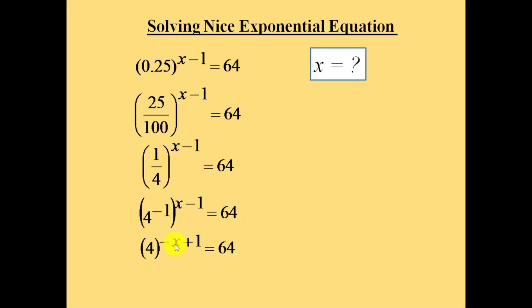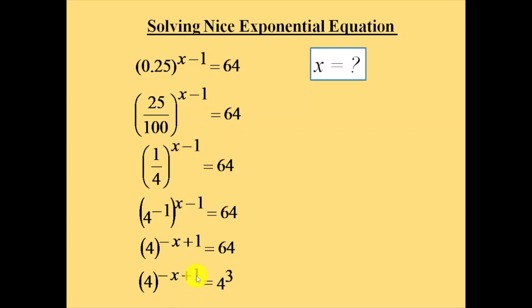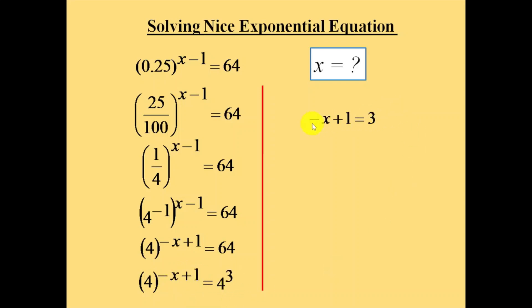That gives us minus 1 into (x minus 1), which equals minus x plus 1. Now write 64 as 4 cubed, since 4 × 4 = 16 and 16 × 4 = 64. With the same base 4 on both sides, we can equate the exponents: minus x plus 1 equals 3.